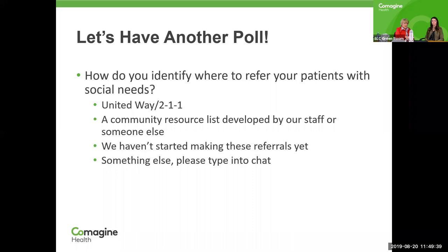We're going to do another poll. How do you identify where to refer your patients with social needs? The first choice is United Way 211; second, a community resource list developed by your staff or someone else; third, we haven't started making these referrals yet; or finally, something else — and if so, please type that into the chat box.